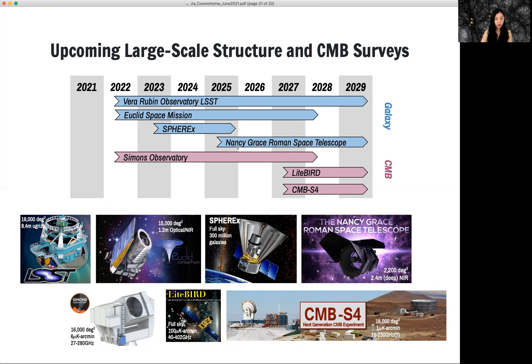and the Roman Space Telescope on the Galaxy side, Simon's Observatory Lightbird CNBS4 on the CNB side.